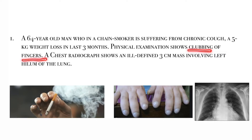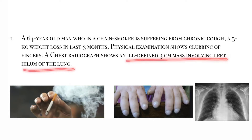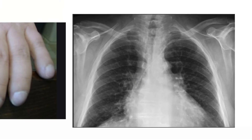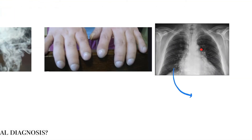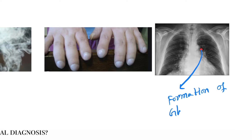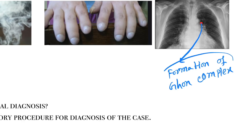Physical examination shows clubbing of the fingers — here you can see the clubbing. A chest radiograph shows an ill-defined 3 centimeter mass involving the left hilum of the lung. So in the left hilum there is a highlighted area where the 3 centimeter mass is present.